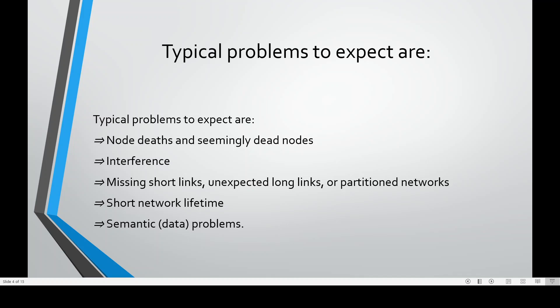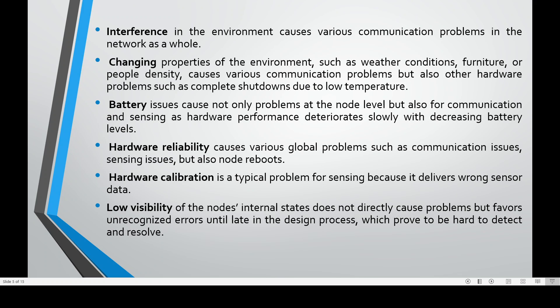Typical problems to expect are node deaths and seemingly dead nodes, interference, missing short links, unexpected long links or partitioned networks, short network lifetime, and semantic or data problems. Interference in the environment causes various communication problems in the network as a whole. Changing properties of the environment such as weather conditions, furniture, or people density cause various communication problems, as well as other hardware problems such as complete shutdowns due to low temperature.